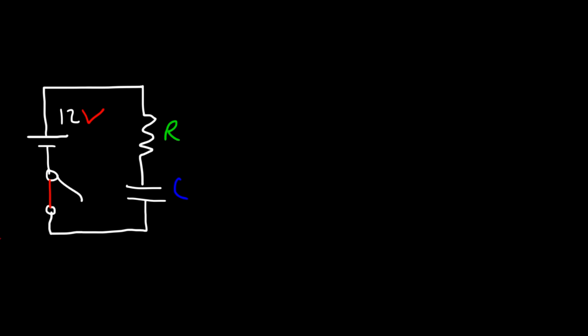Once the switch is closed, current will flow from the positive terminal of the battery to charge the capacitor — the longer side is the positive terminal. Keep in mind that electrons flow in the opposite direction: they flow from the negative terminal and enter the positive terminal.